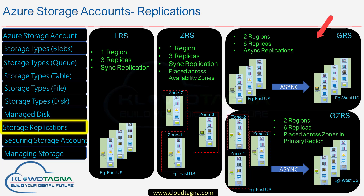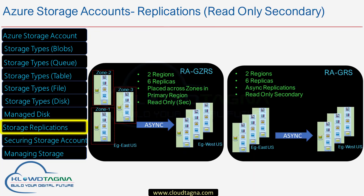GRS stands for Geo-Redundant Storage. In GRS, storage accounts have six copies: the first three copies are placed in your primary region and the next three copies are placed in a secondary region. The sync between primary and secondary region is asynchronous. If you are planning to protect your workload from a regional disaster, you can choose this option. Note that you have no access to secondary copies unless a regional disaster is activated. Azure Storage Account also supports a read-only secondary replication model, where you have full access on the primary region and read-only access on the secondary — useful for specific data analytics requirements.